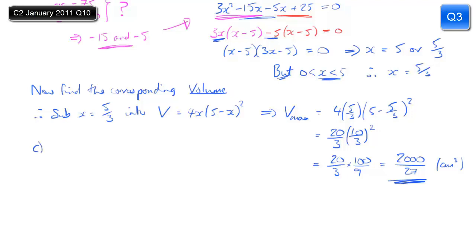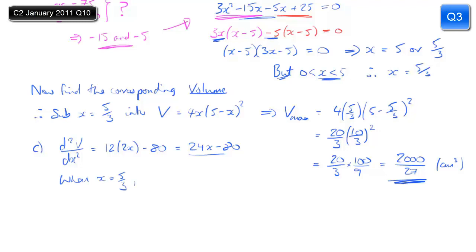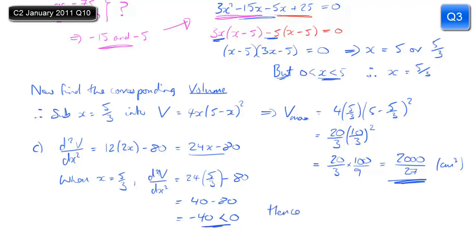For part c, I need to justify using calculus that this is a maximum, so I use the second derivative d²V/dx². Differentiating dV/dx: 12x squared becomes 24x and minus 80x becomes minus 80, giving d²V/dx² equals 24x minus 80. Substituting x equals 5/3: 24 times 5/3 is 40, minus 80 gives minus 40. It's negative, which confirms we have a local maximum.